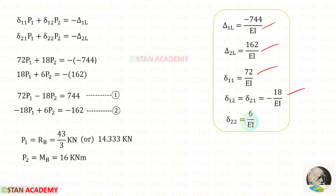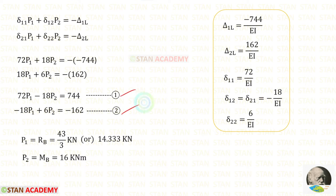We have found all of the displacements. Applying them to the two compatibility equations — noting that negative times negative gives positive — we can solve the two simultaneous equations using a calculator. The first coordinate is RB, so P1 is RB; we get RB equals 14.333 kN. The second coordinate is MB, so P2 is MB; we get MB equals 16 kNm.